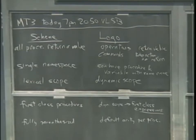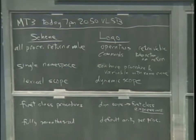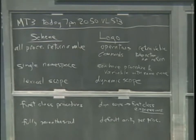In traditional Logo, there's actually a third namespace. The same symbol can also be the name of something called a property list, which we aren't going to worry about here. Scheme is lexically scoped; Logo is dynamically scoped — I'll talk more later about the implications of those choices. Scheme has first-class procedures; Logo doesn't. First-class procedures are at the heart of everything we've been doing all semester.